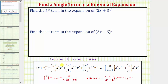Looking at the first term, notice how we have zero factors of y, we have n choose zero, and the sum of the exponents on x and y is n. The second term has one factor of y, n choose one, and the exponents sum to n. The third term has two factors of y, n choose two, and again the exponents sum to n. So whatever term we're looking for, the exponent on y is one less than the term number, and the sum of the exponents is always n, the original exponent on the binomial.